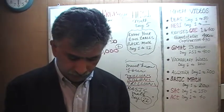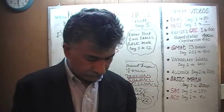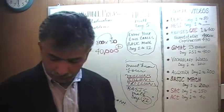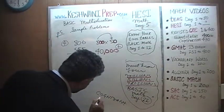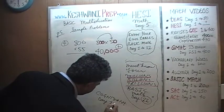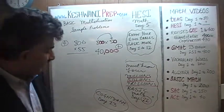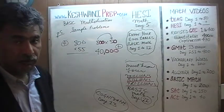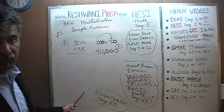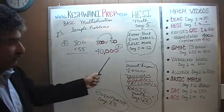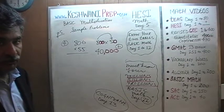The correct answer, whatever it is, is going to be slightly more than 40,000. By the way, we learned the word 'cognizant' in our vocabulary lessons on day number 13 — just type in 'vocabulary words day 13' and the video will pop up. For the exam, pick the answer choice that is slightly more than 40,000.